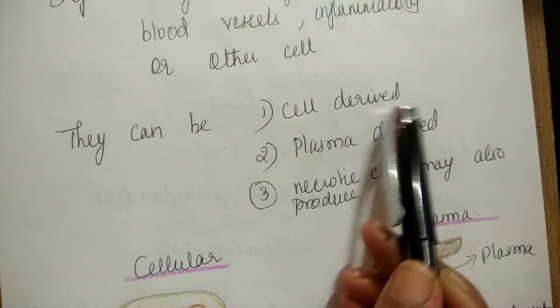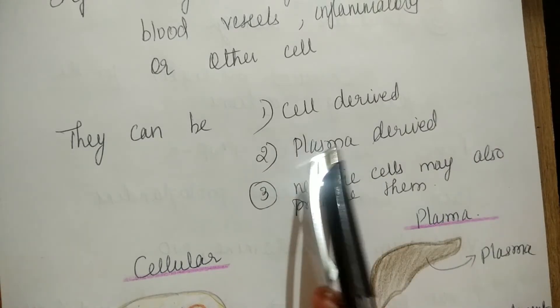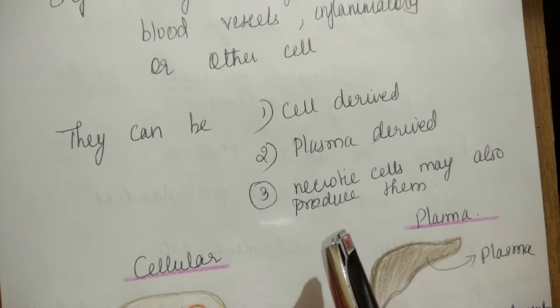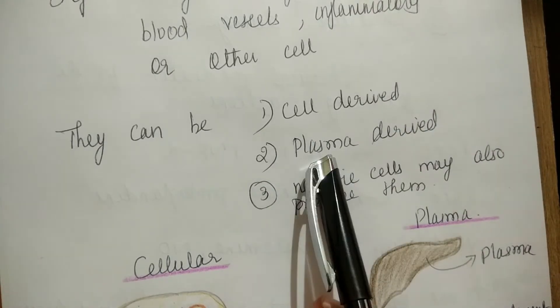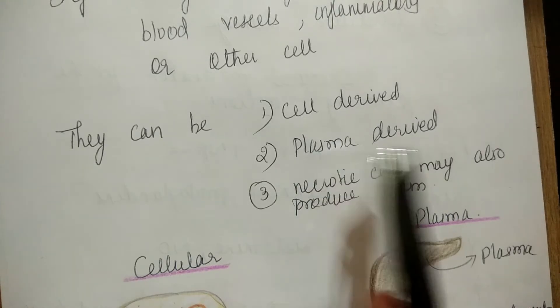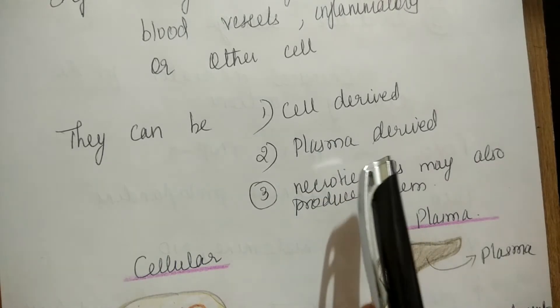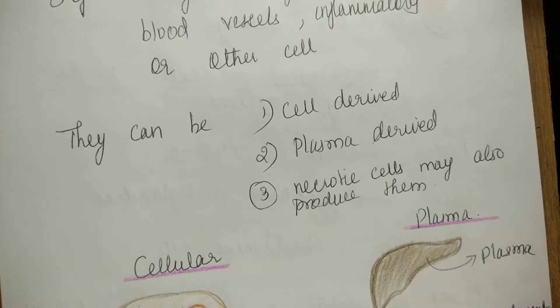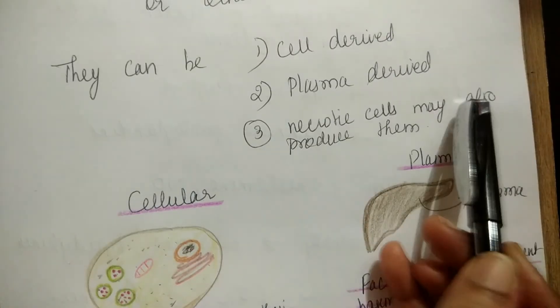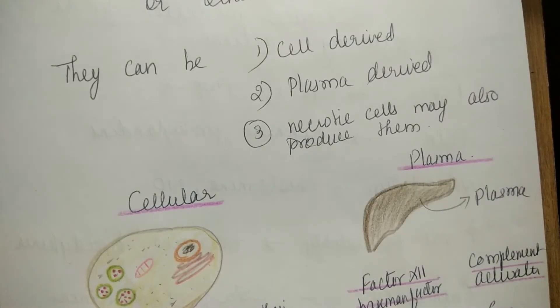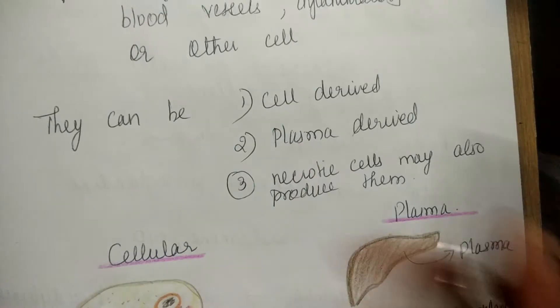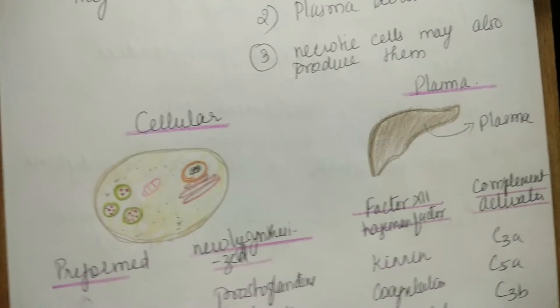These chemical mediators are cell-derived or plasma-derived. Plasma-derived cells may also produce chemical mediators sometimes. Cells during inflammation and necrosis produce them, but major sources are cellular-derived and plasma-derived. So cellular-derived first.